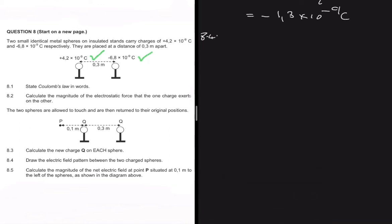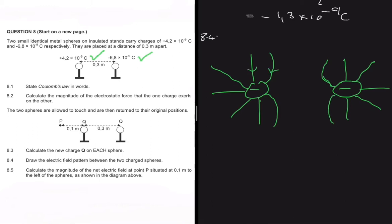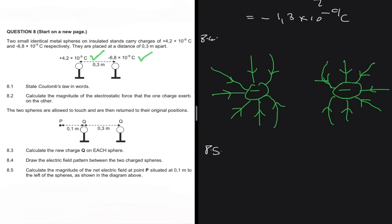To sketch the electric field pattern, draw one charge on each side and add field lines on both. Show the repulsion using curved arrows pointing away from each other, since the charges are like charges. One important convention: when spheres are negatively charged, the arrows point towards the sphere; when positively charged, the arrows point outward.